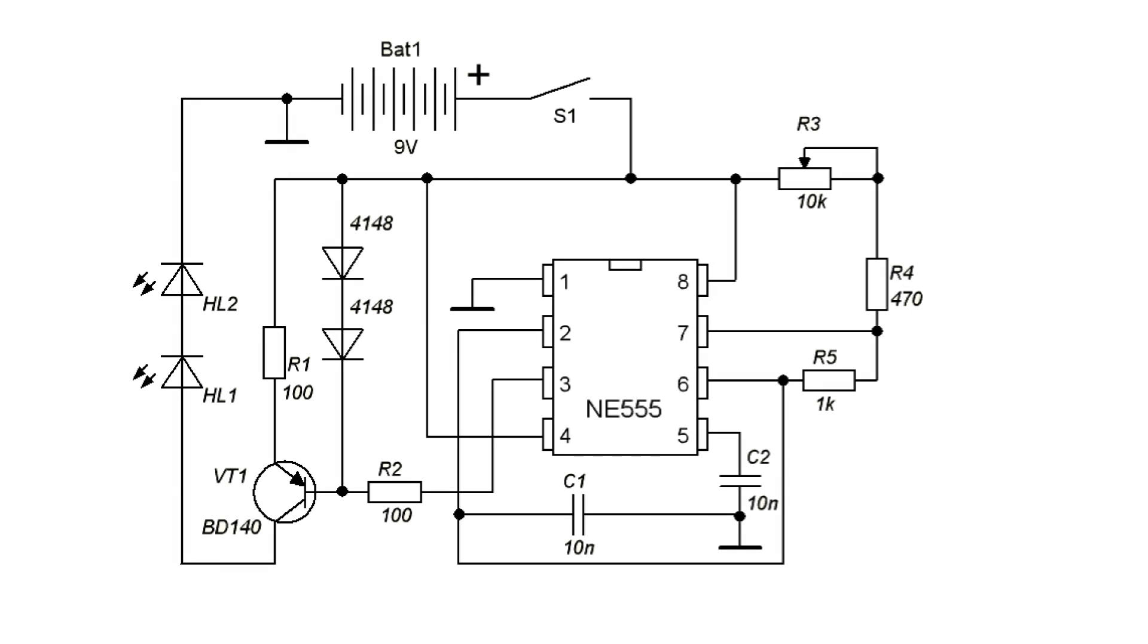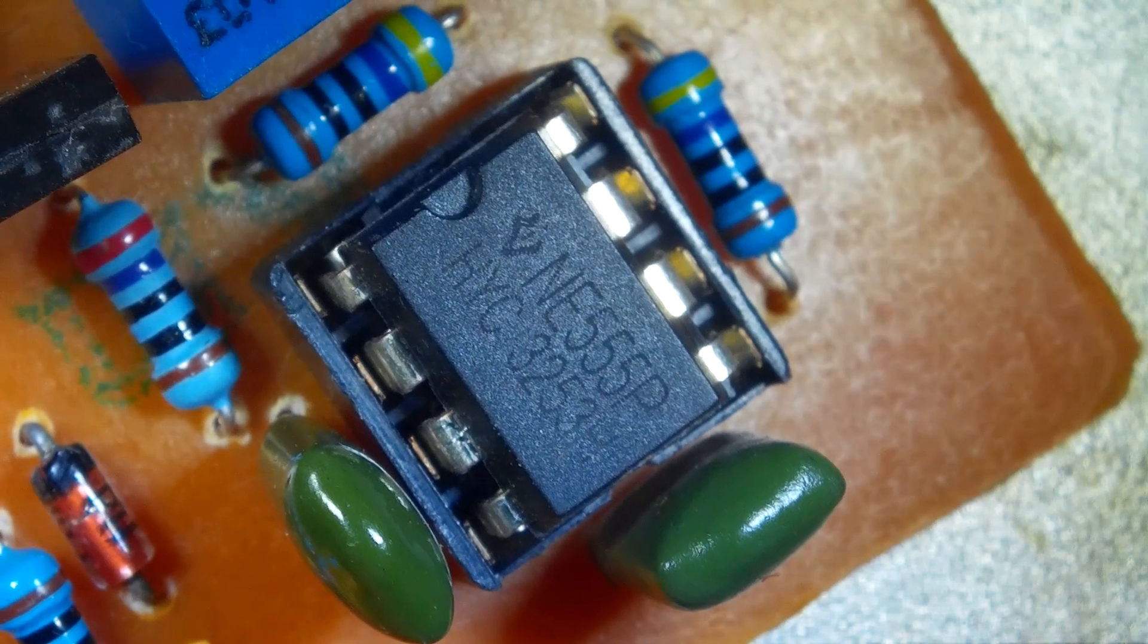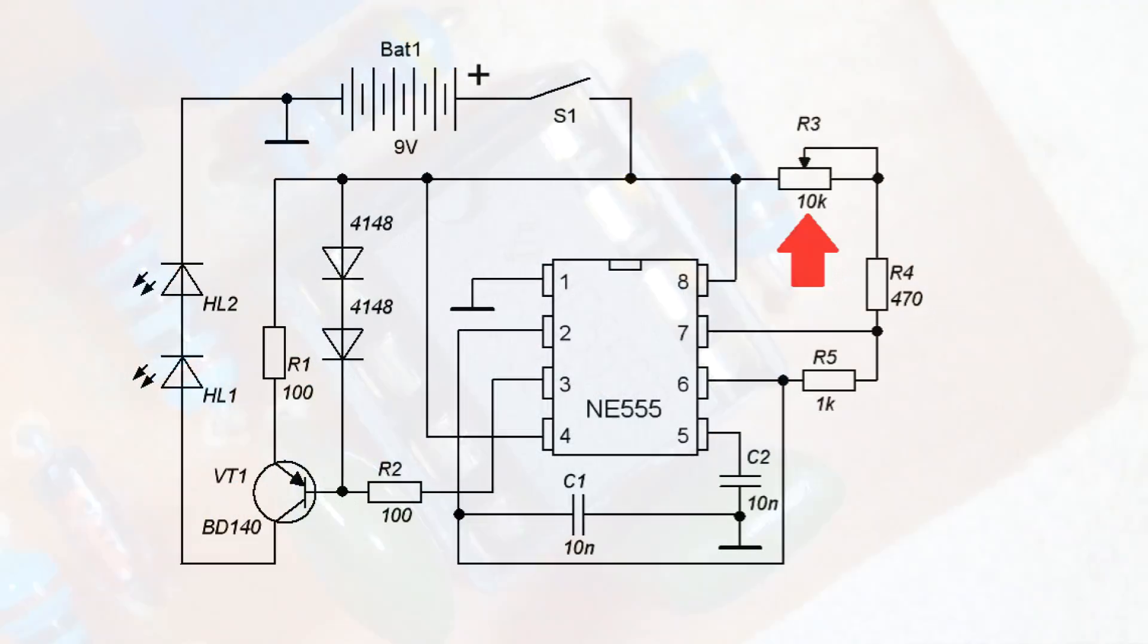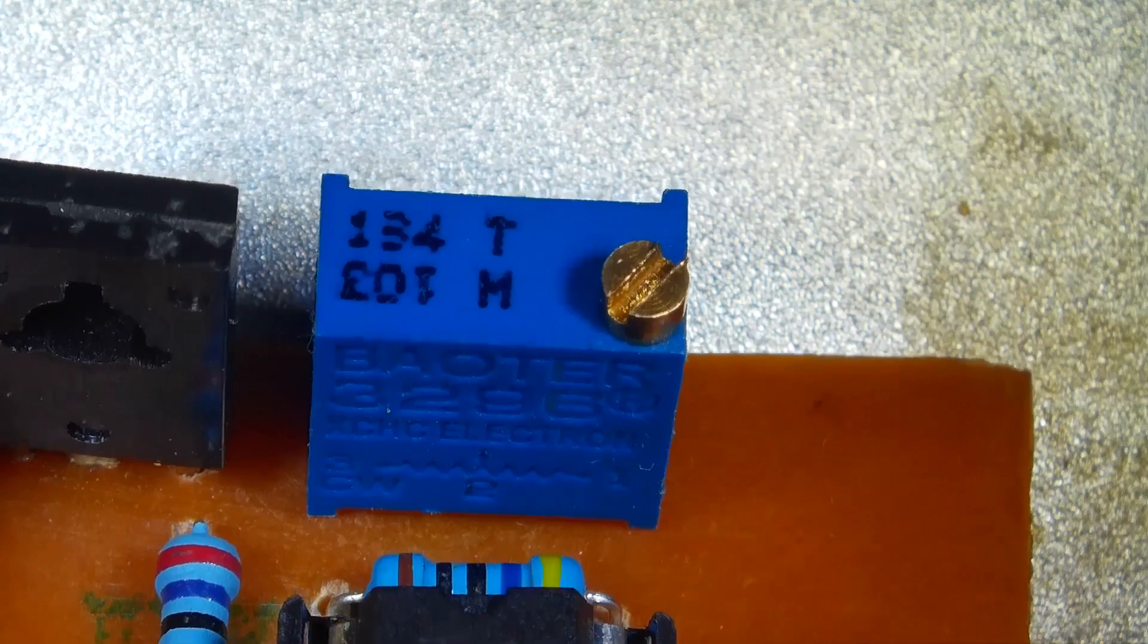Here is the scheme. As a generator, we use the NE555 timer. It's possible to use any other generator circuit. The generator is tuned to the desired operating frequency by a trimmer.